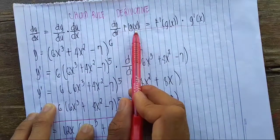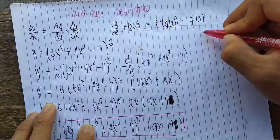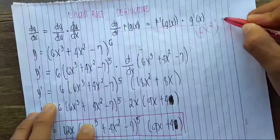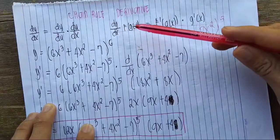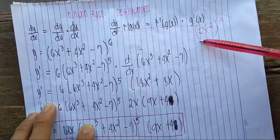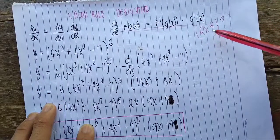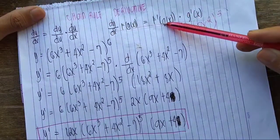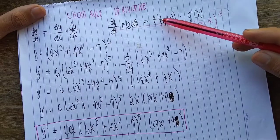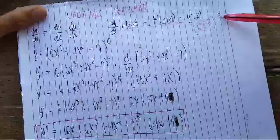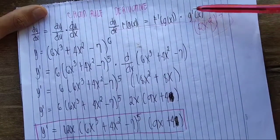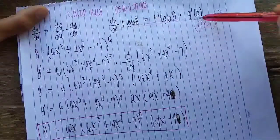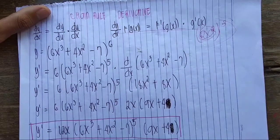The derivative of f(g(x)): for example, if we have (2x²)³, then f(g) is the outer function (the cube), and g(x) is 2x² inside. So the formula says: we first take the derivative of f(g(x)) — that's the outer function — and then multiply it by the derivative of g(x), the inside function. We will see this in our examples.